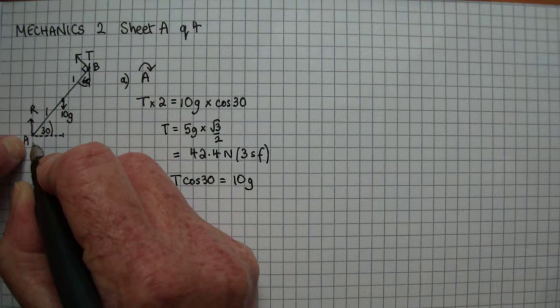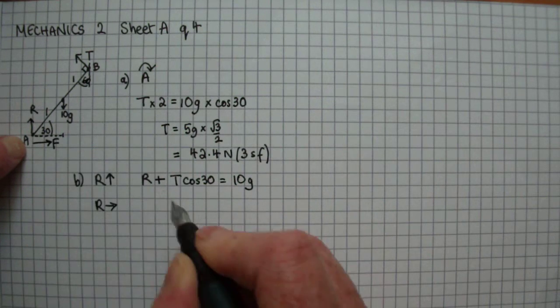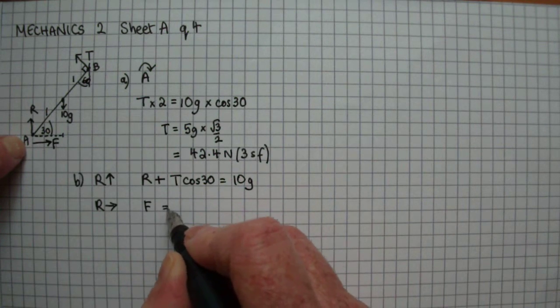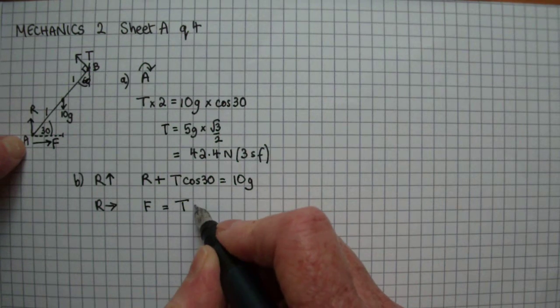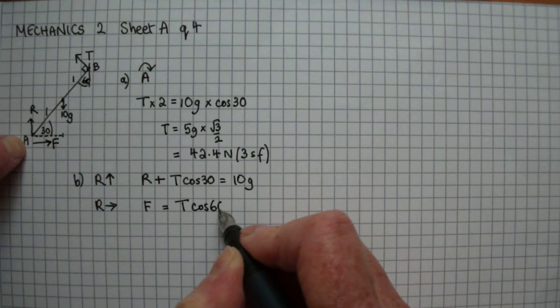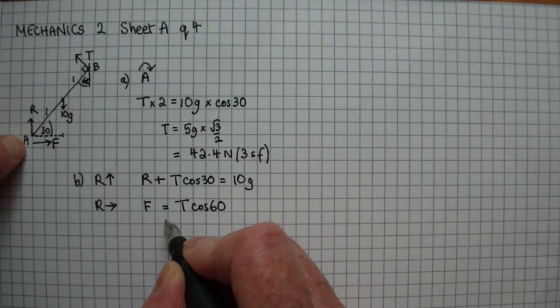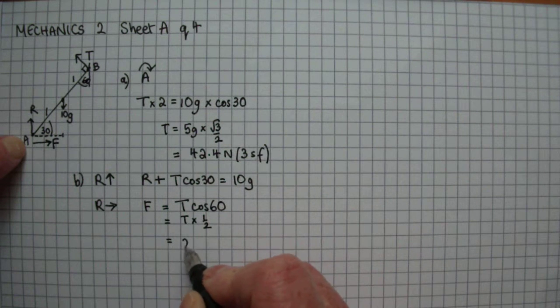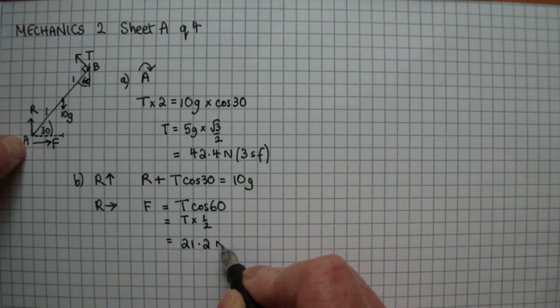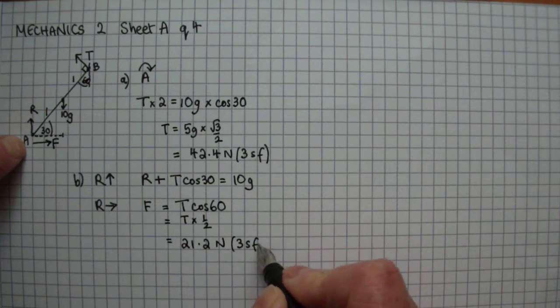We've got frictional force in that direction, F, which must equal the component of tension in that direction, which is T cos 60. So F is equal to T times a half, which is equal to 21.2 Newtons to three significant figures.